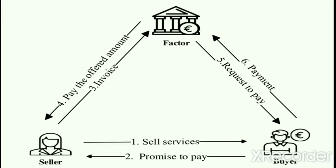The seller then provides the invoice or bill for the purchase to the factor, who is a financial institution. The factor then pays the offered amount to the seller. The fifth step includes a requisition to pay sent from the factor to the buyer. The buyer is then bound to pay the required amount to the factor, and at last the buyer pays the remaining amount to the factor.